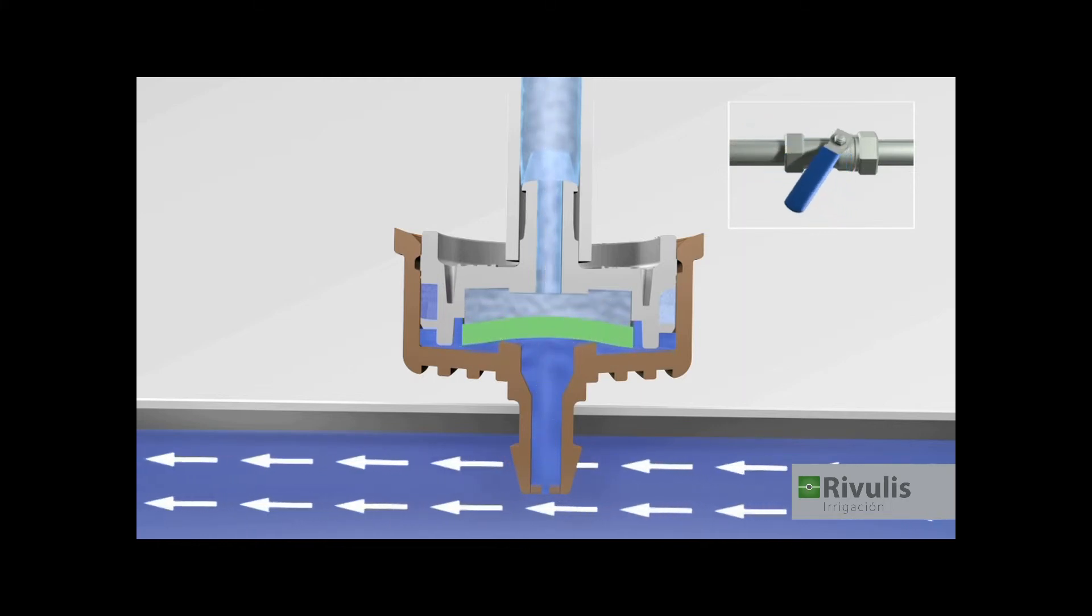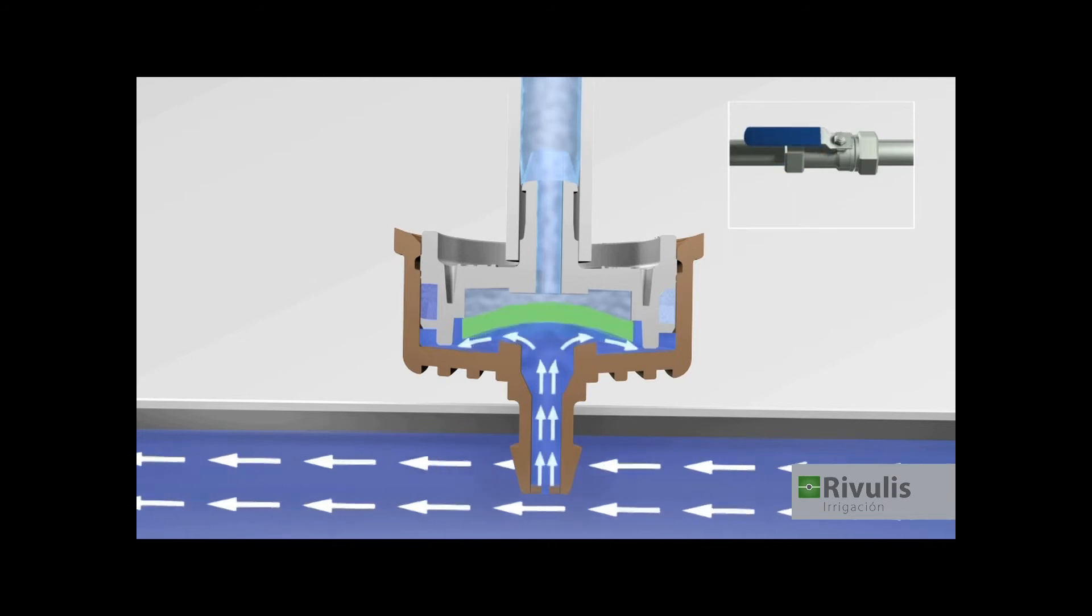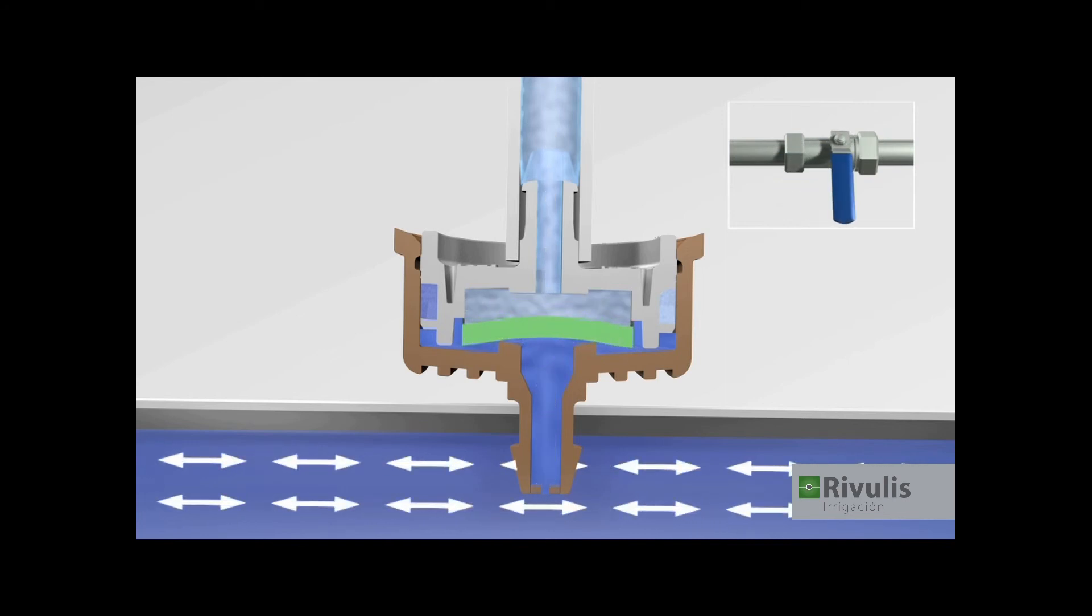SuperT's regulation technology and no-drain mechanism make it an ideal choice for many applications, especially pulse irrigation in greenhouses and nurseries.